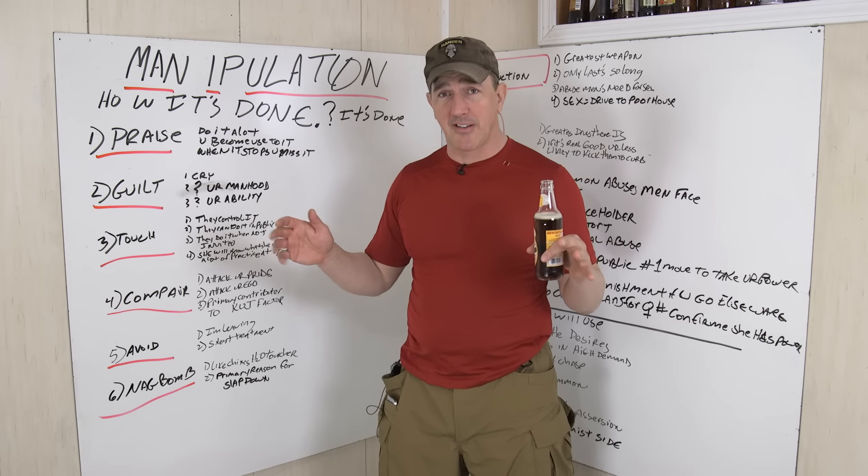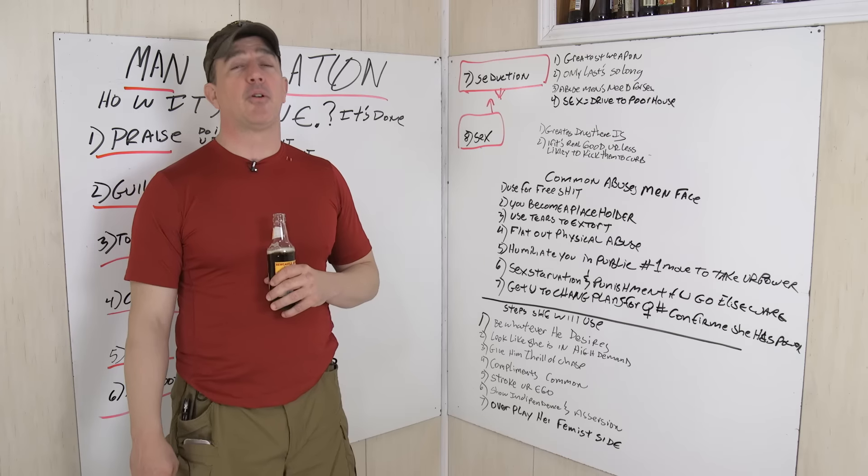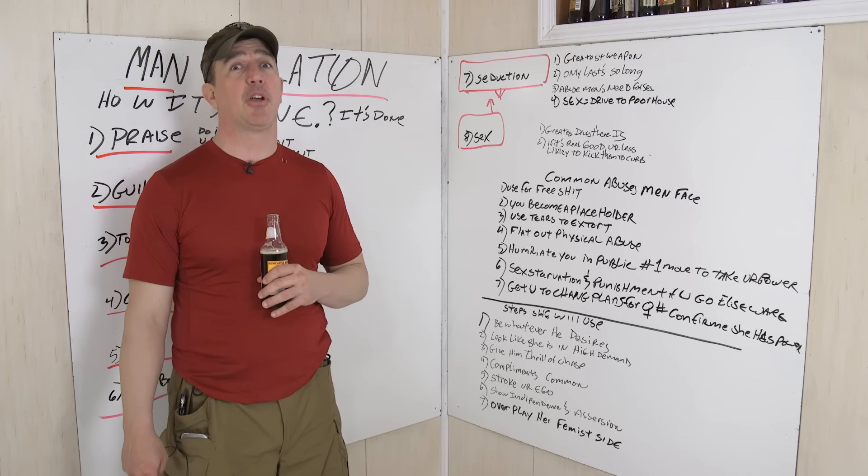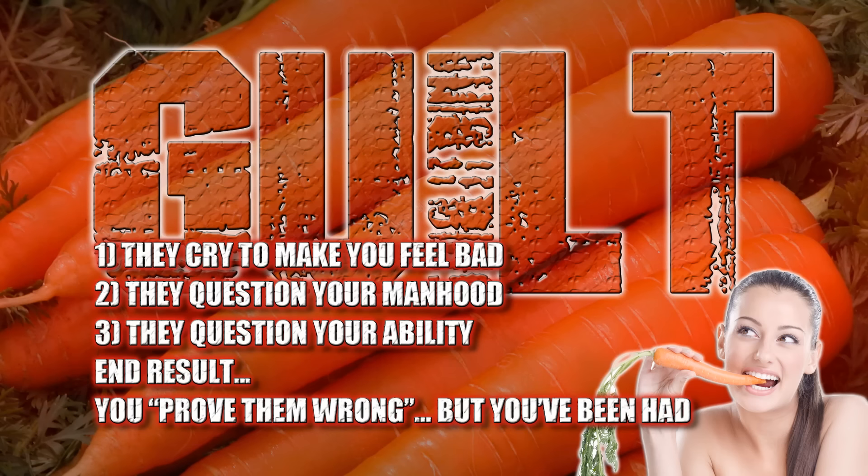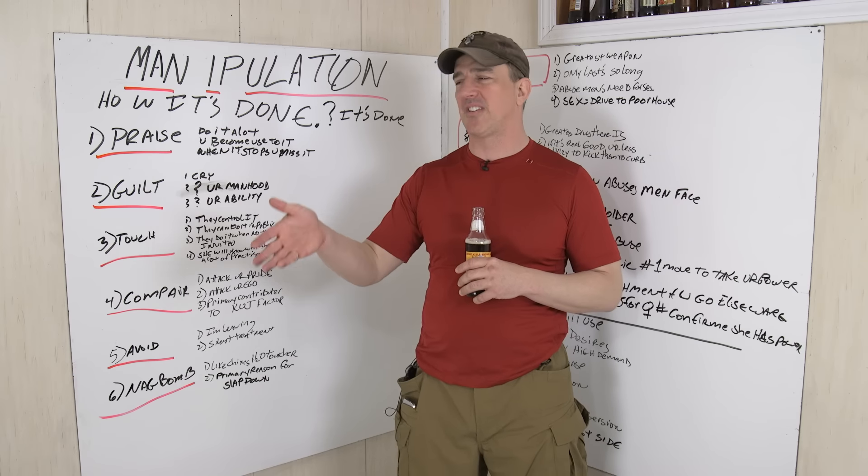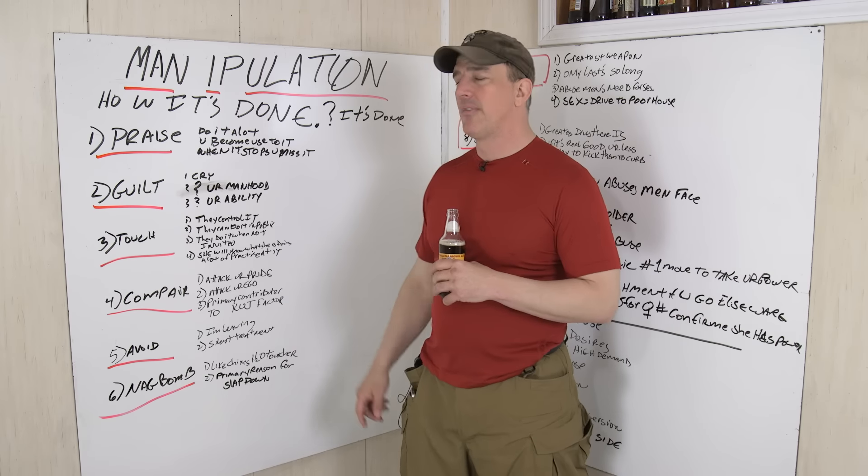The bumping of the ugly factor, that's at the end of this presentation. Anyone who's ever been in a relationship for more than two seconds is familiar with the term guilt. Anyone who grew up in a single family home, especially with a mother in charge, this is the primary weapon to get you to do what they want you to do. They like to cry, make you feel bad. They question your manhood, especially in public. And they question your ability.